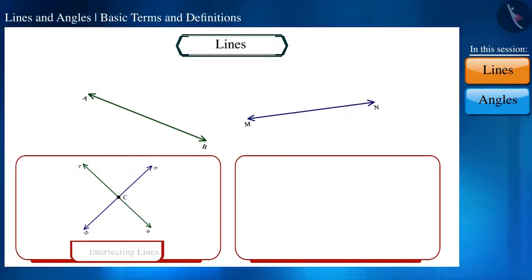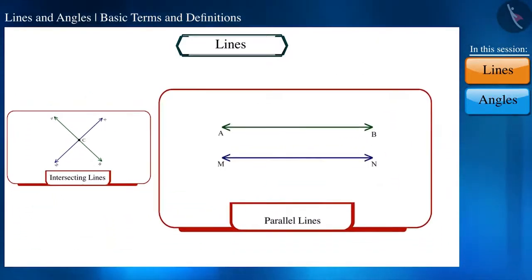Second are those which do not intersect each other, that is, they are parallel to each other. The length of the common perpendicular at different points of these two parallel lines will be the same.